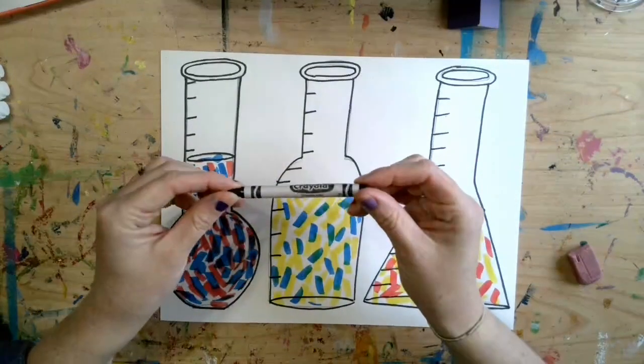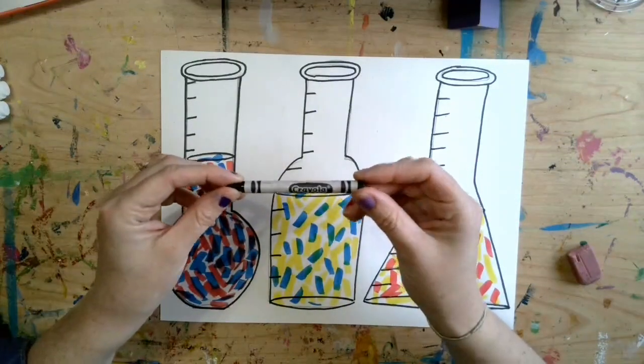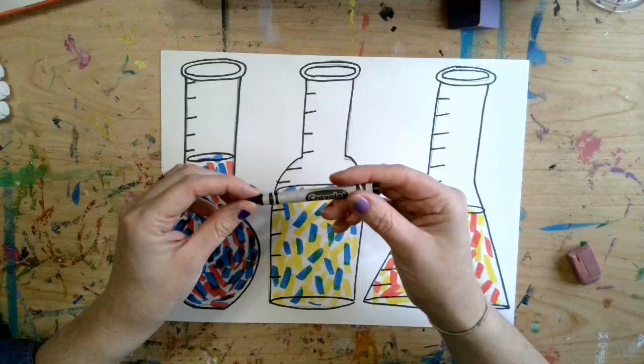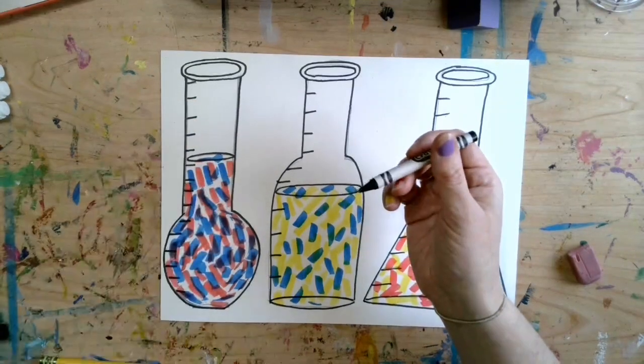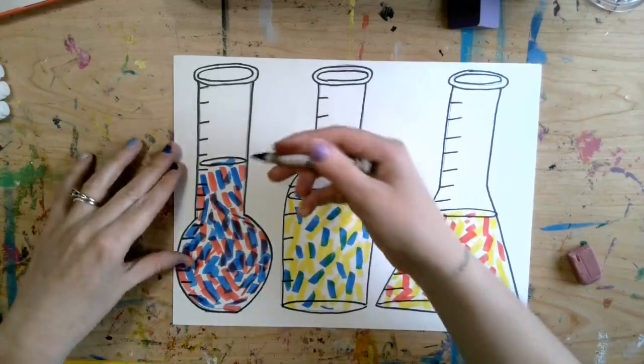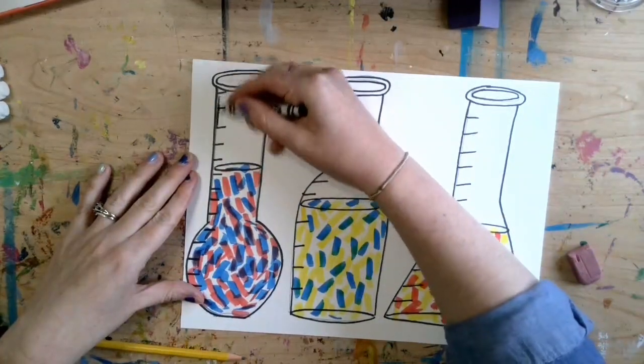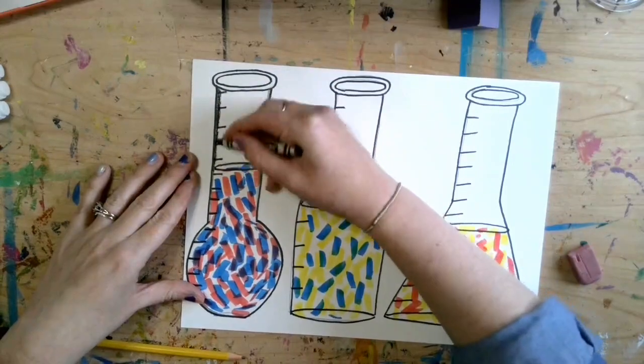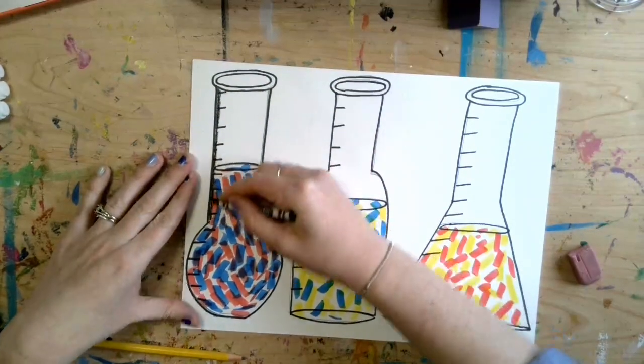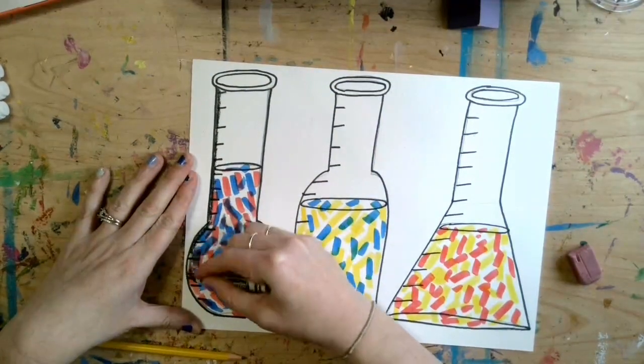So to add value on mine, I'm using a black crayon. Now you can use a pencil if you have one on hand, that would work just as well. So I'm going to start by going on the edges of my forms or my beakers and I'm going with a dark value, so I'm pressing kind of hard.